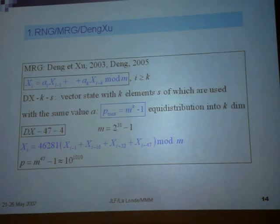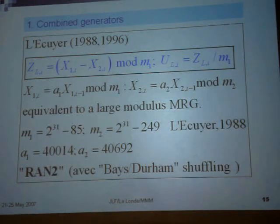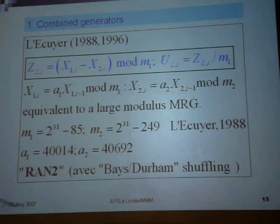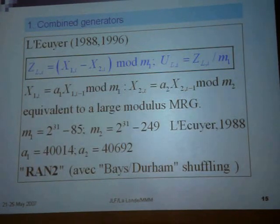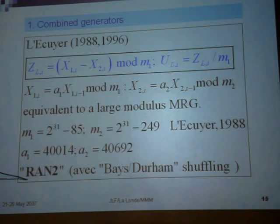Another idea is to combine several basic generators so as to get the equivalent of a large modulus single generator. For instance, as proposed by L'Ecuyer in 1988 or 1996, you can take two generators with a classical formula. You take the difference divided by m1 and take the remainder. This is equivalent to a large modulus generator. With appropriate values for m1, m2, a1, and a2, this is the so-called MRG32k3a generator — some of you may be using it.